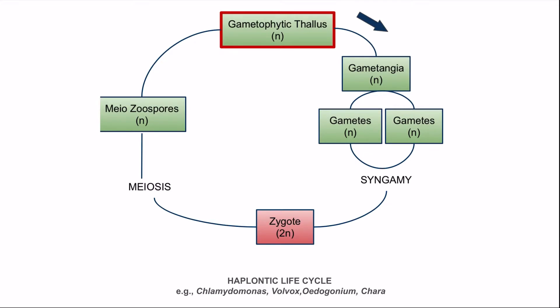In the gametophyte, gametangia are found. In the gametangia, haploid gametes are formed. After syngamy or fusion of two gametes, a diploid zygote is formed, and this zygote is the only diploid stage. Soon after the formation of the zygote, meiosis occurs, and after meiosis, haploid meozoospores are formed which germinate to form the gametophytic thallus.